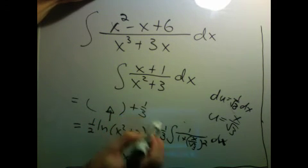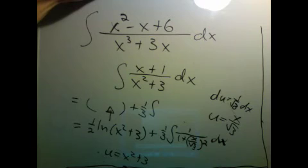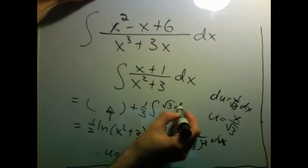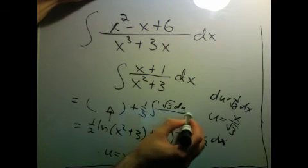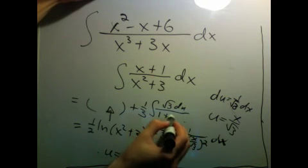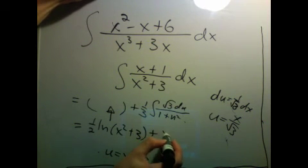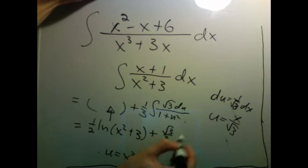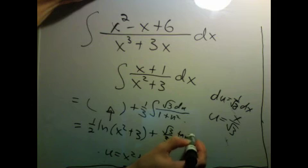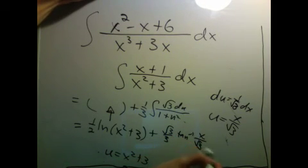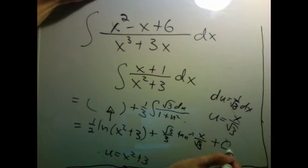Plus 1 third integral root 3 du over 1 plus u squared. And this is just root 3 over 3 tangent inverse of u, which was x over root 3. And I guess I'll put a plus c on all of this.